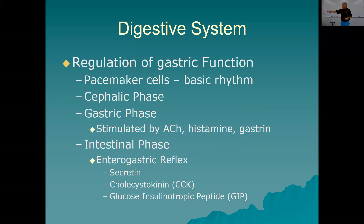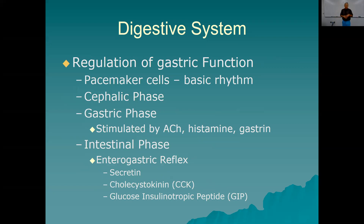These hormones do other things too. Secretin stimulates the pancreas to release pancreatic juice into the small intestine. Cholecystokinin has a big effect on the gallbladder — it causes the gallbladder to constrict and push bile into the duodenum. Glucose insulinotropic peptide (GIP) stimulates the endocrine part of the pancreas to secrete insulin, because you're going to need insulin for the carbohydrates you've eaten. GIP used to be called gastric inhibitory peptide, but now it's called glucose insulinotropic peptide — same acronym, both functions.